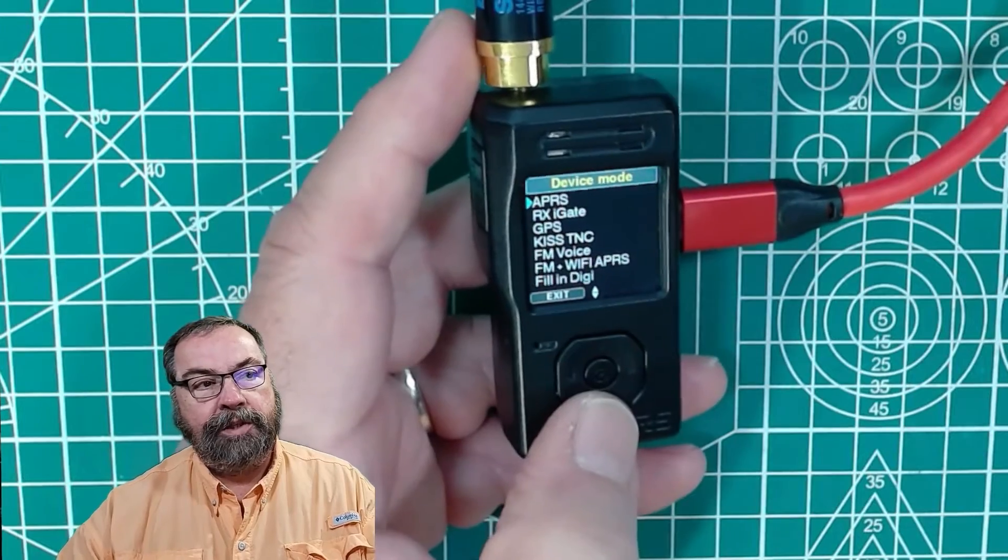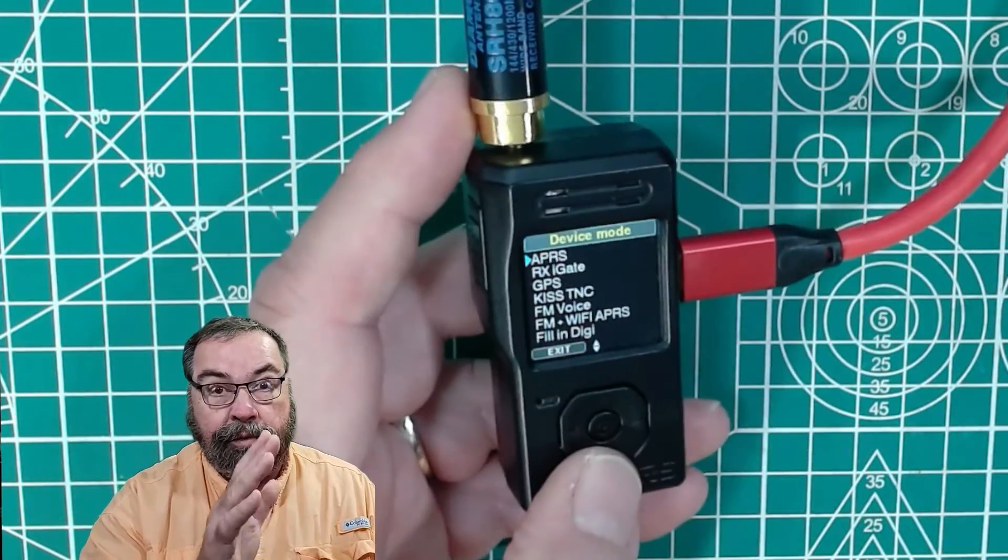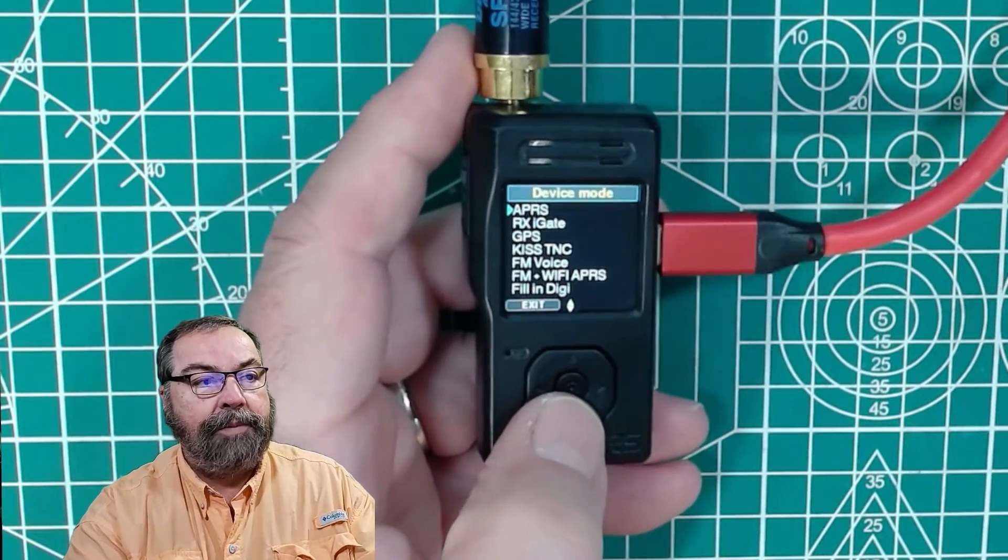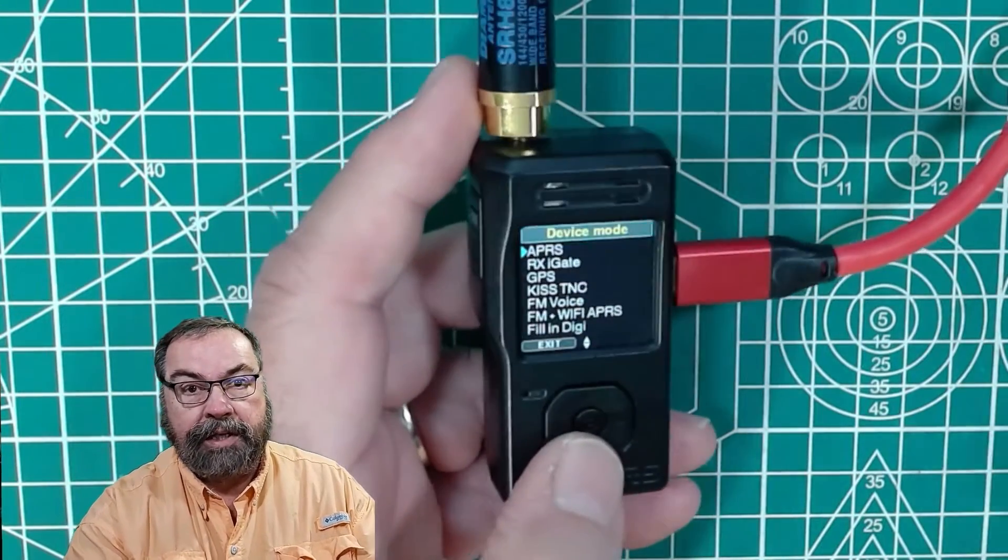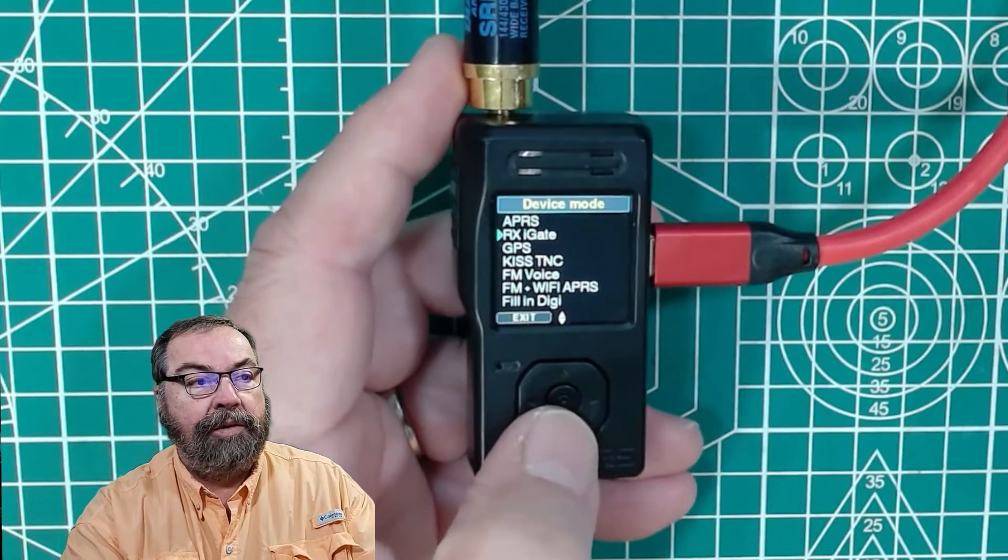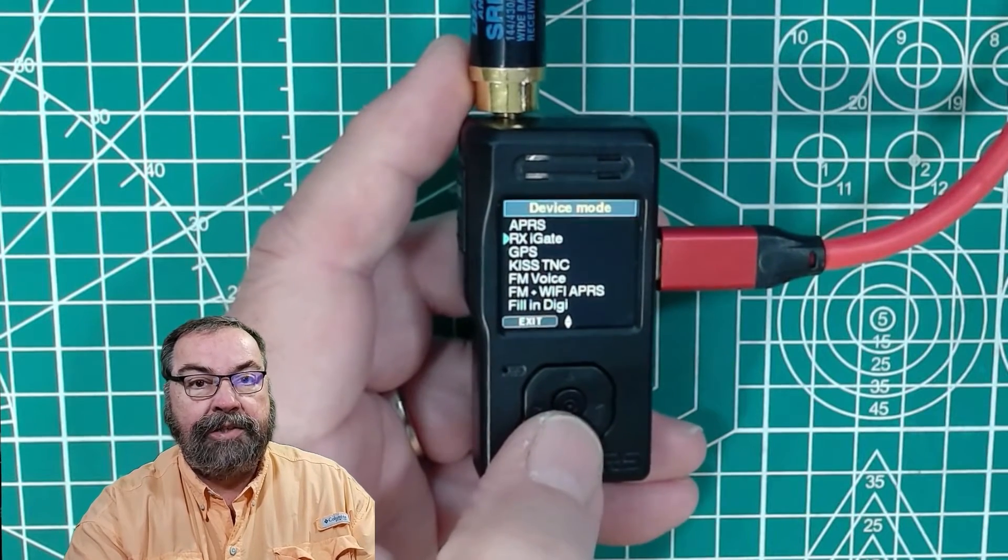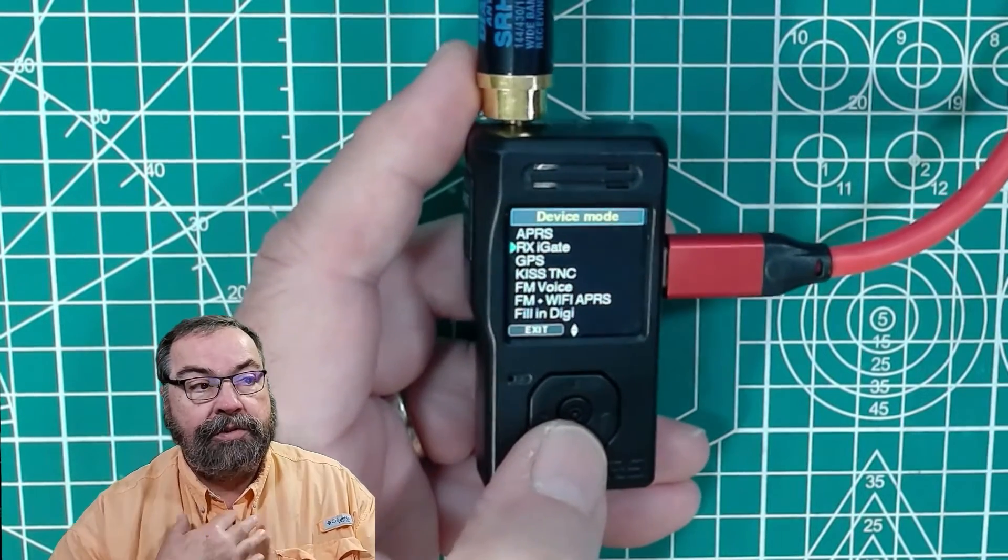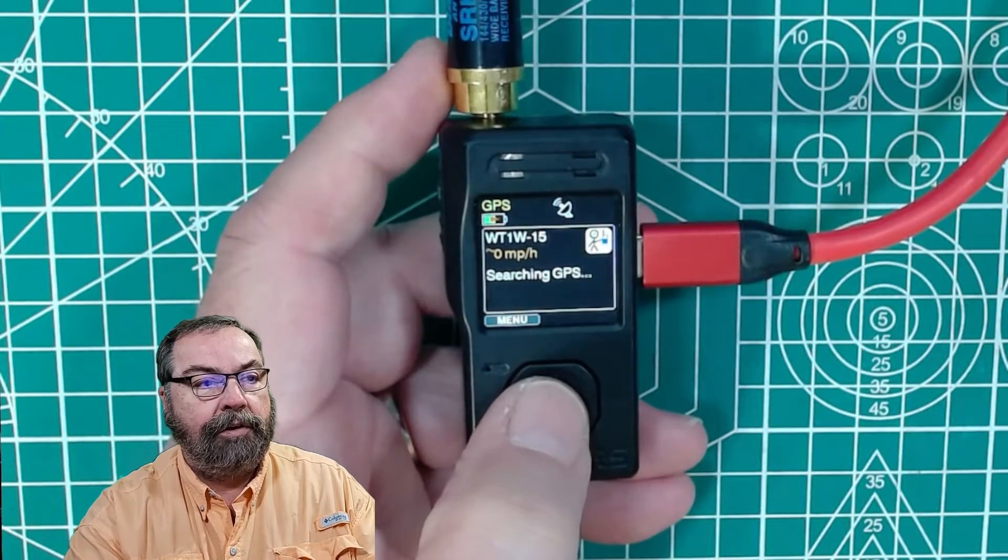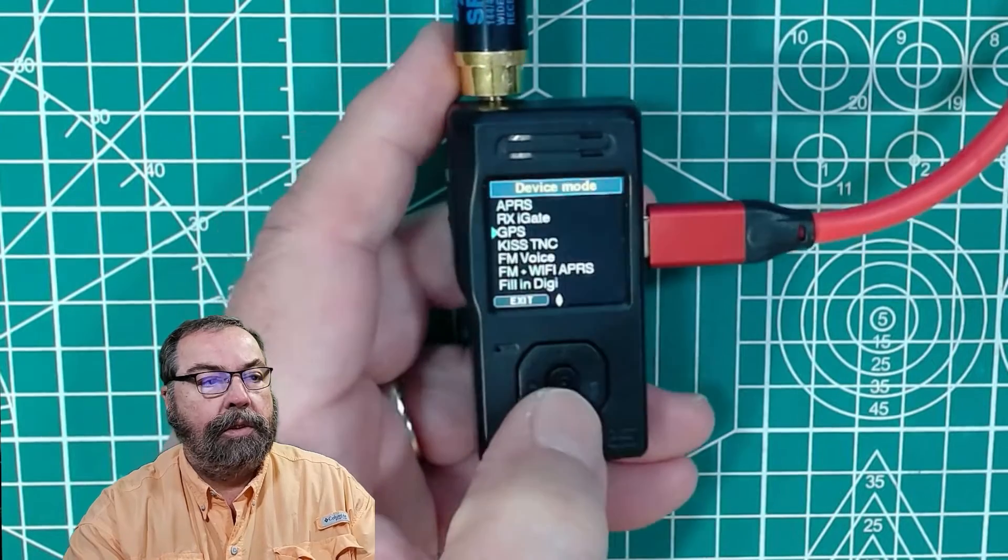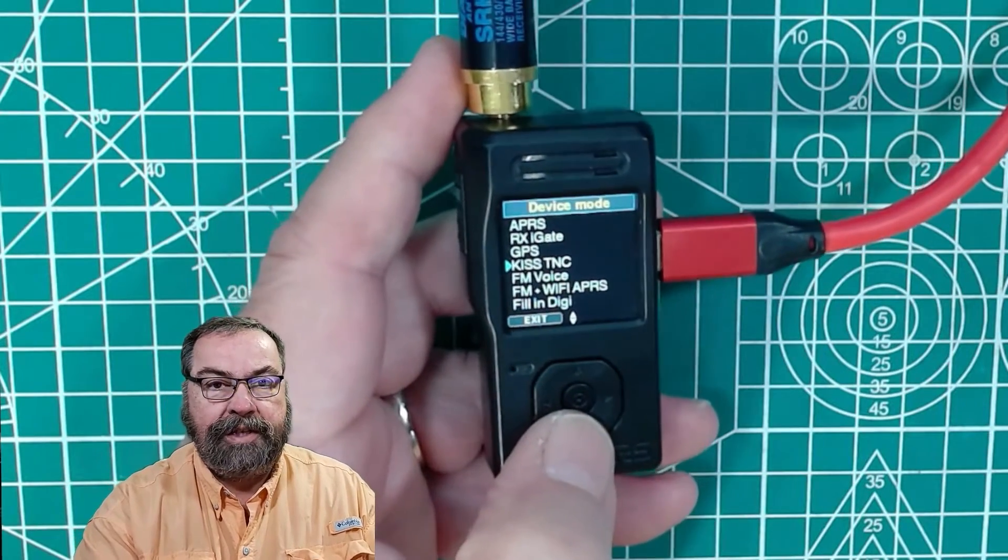If we go back one more time and we go into device mode, this is where we can set the mode that the device actually is operating in. So in APRS mode, this acts like your radio, it beacons APRS. No iGate, nothing else. If it's receive iGate, it is a receive only iGate, which is normally how I use it in my truck. Check our GPS status here. Turn it on or off. Of course, I'm not going to get GPS in the house.